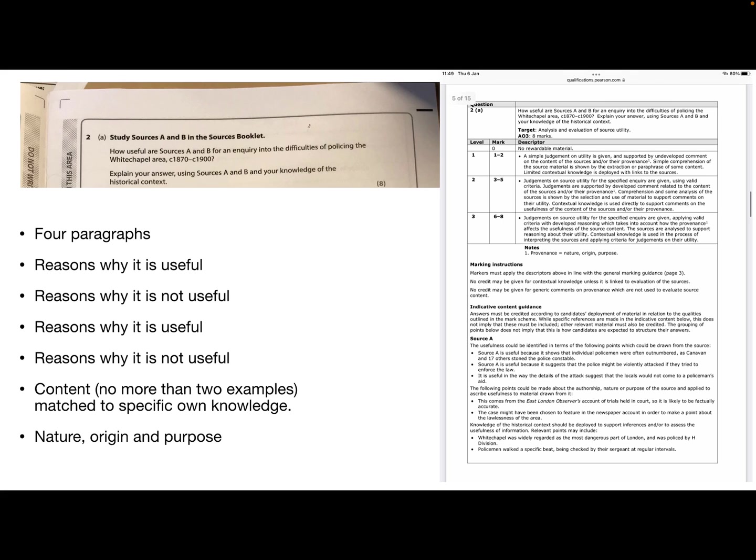The next question, the eight mark question. So you must have four paragraphs. Reasons why it's useful. Reasons why source A is not useful. Reasons why source B is useful. Reasons why it's not useful. And then somewhere within that why it's useful and not useful about the whole source. You need to then cover the content, no more than two examples because you don't have time, and match that to your specific knowledge. What about that is true? What about that is not so true? And then the nature, origin and purpose.